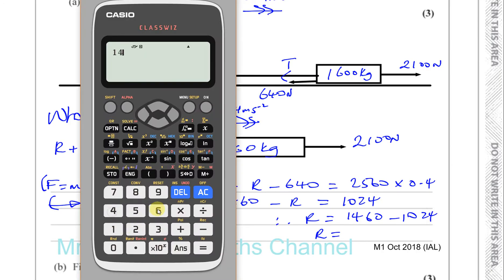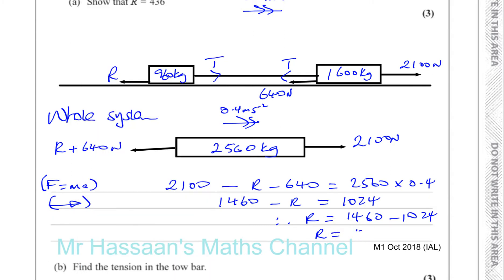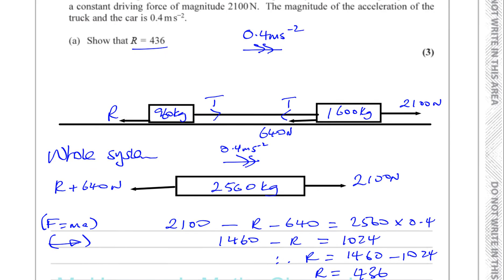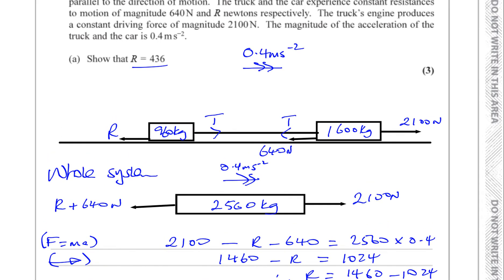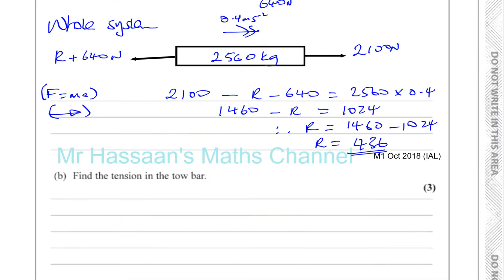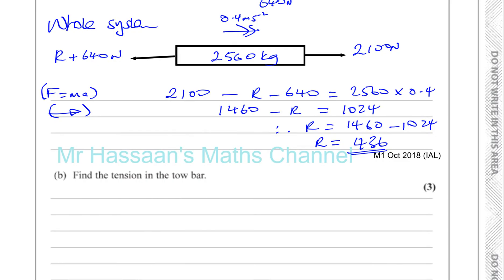So R is equal to 1,460 minus 1,024, which gives 436. So R is 436 newtons, which is exactly what we had to show. That confirms 436 newtons is the resistance offered by the car.